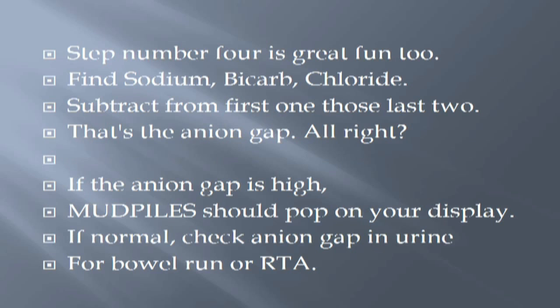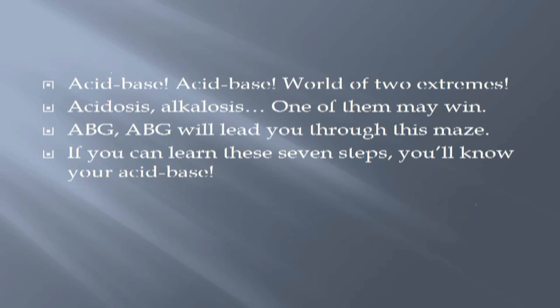Step number four is great fun too. Find sodium, bicarb, chloride. Subtract from the first one those last two — that's the anion gap, all right. If the anion gap is high, MUDPILES should pop on your display. If normal, check anion gap in urine for bowel run or RTA.